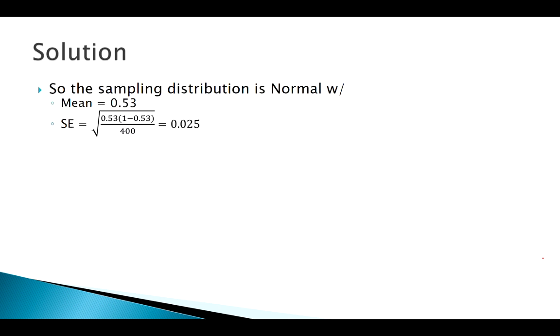So assuming that distribution, normal with a mean of 0.53, standard error, plugging in p, 0.53 there, our standard error is this, and here's what we're looking for. So let's standardize. Find our z-score. Our z-score is negative 1.2.